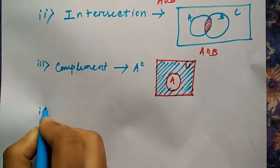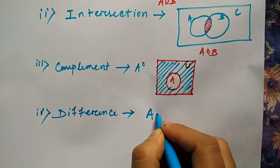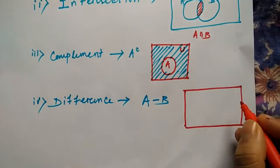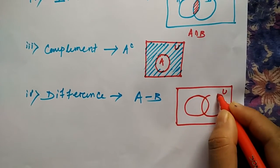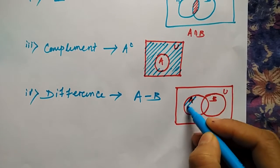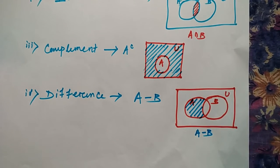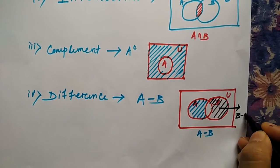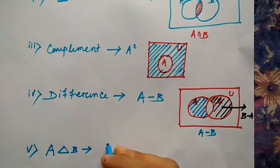Then we'll see the difference. Let's say A difference B. With the universal set, one set A and one set B — the element which is only present in A, that will be A minus B, and the element which is only present in B, that will be B difference A.